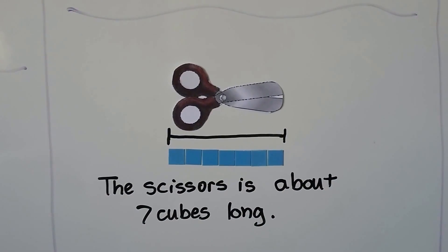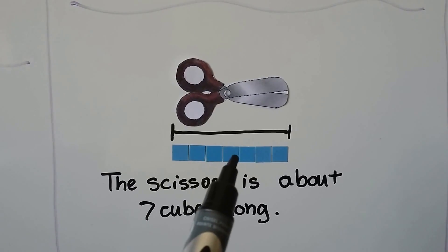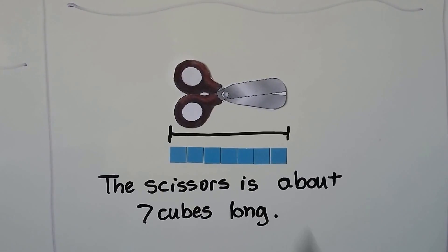The scissors is about seven cubes long. One, two, three, four, five, six, seven.